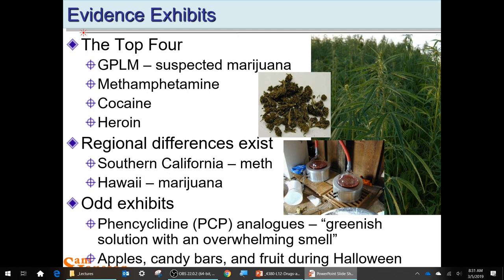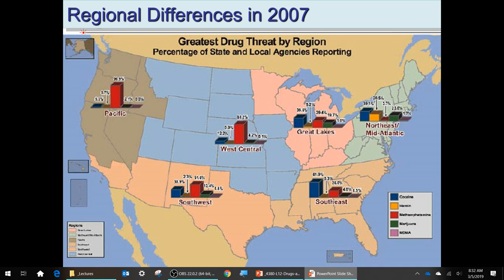You have different evidence exhibits — the actual stuff that comes in as evidence. The top four are green material like marijuana, methamphetamine, cocaine, and heroin. You also get analogs of PCP — a green solution with an overwhelming smell. And during Halloween there's sometimes an issue of apples with razor blades; during Halloween some medical imaging places offer to x-ray your candy. This is the regional differences in drug evidence from 2007 data on drugabuse.gov.